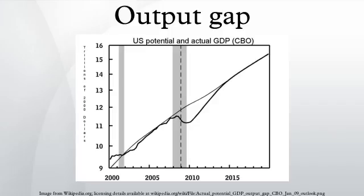The GDP gap, or the output gap, is the difference between actual GDP (actual output) and potential GDP. The calculation for the output gap is Y minus Y*, where Y is actual output and Y* is potential output.